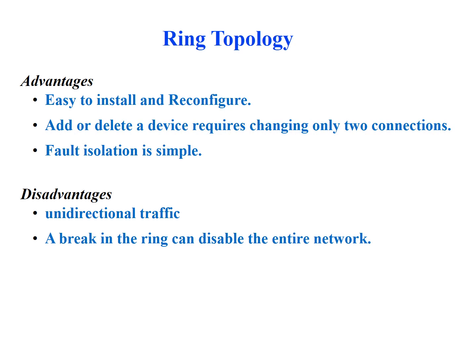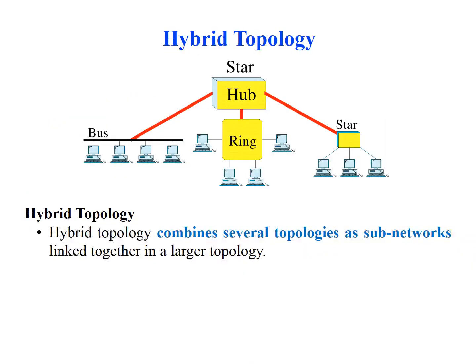We have covered all the topologies listed at the beginning of the video. One more topology to mention is hybrid topology, which is not in our original list. It is a combination of several topologies as sub-networks within a larger network. As shown in the diagram, it may contain a star, bus, and ring within its network, forming a hybrid topology. Thank you for your patient listening — hope you have learned about network topologies and their types. I will catch you in another video with a different topic.